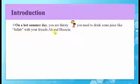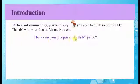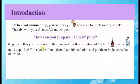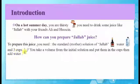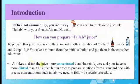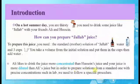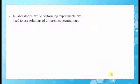On a hot summer day you are thirsty and need to drink some juice like Jalab with your friends Ali and Hussain. To prepare this juice you need the standard (mother) solution of Jalab, water, and three cups. You take a volume from the initial solution and put it in the cups, then add water. Ali likes to drink the juice more concentrated than Hussain's, and your juice is more diluted than Ali's.